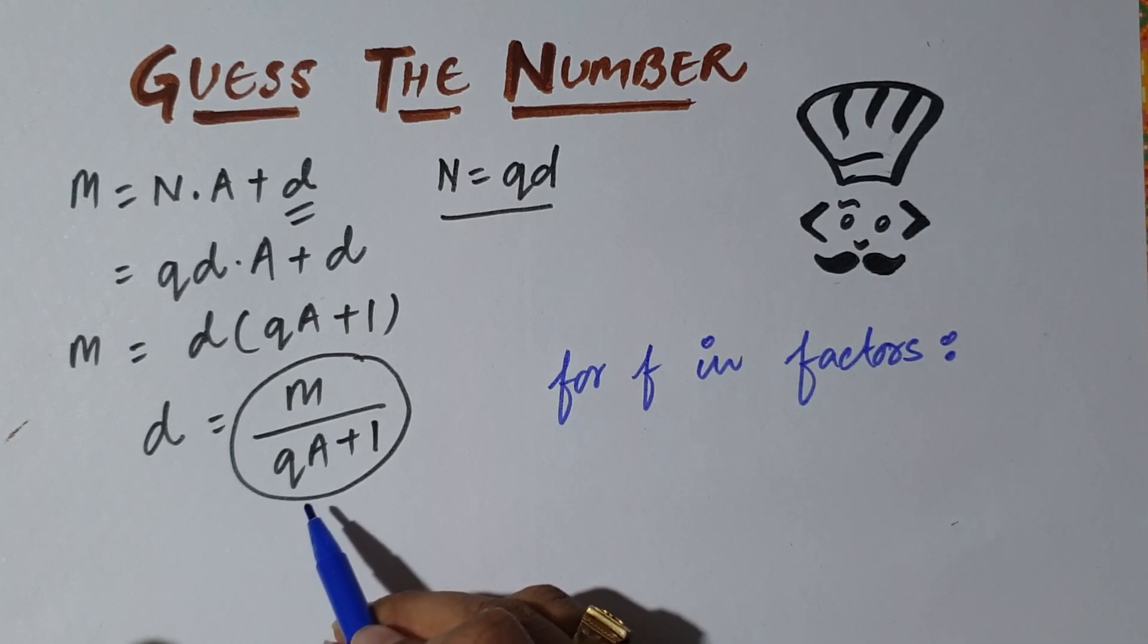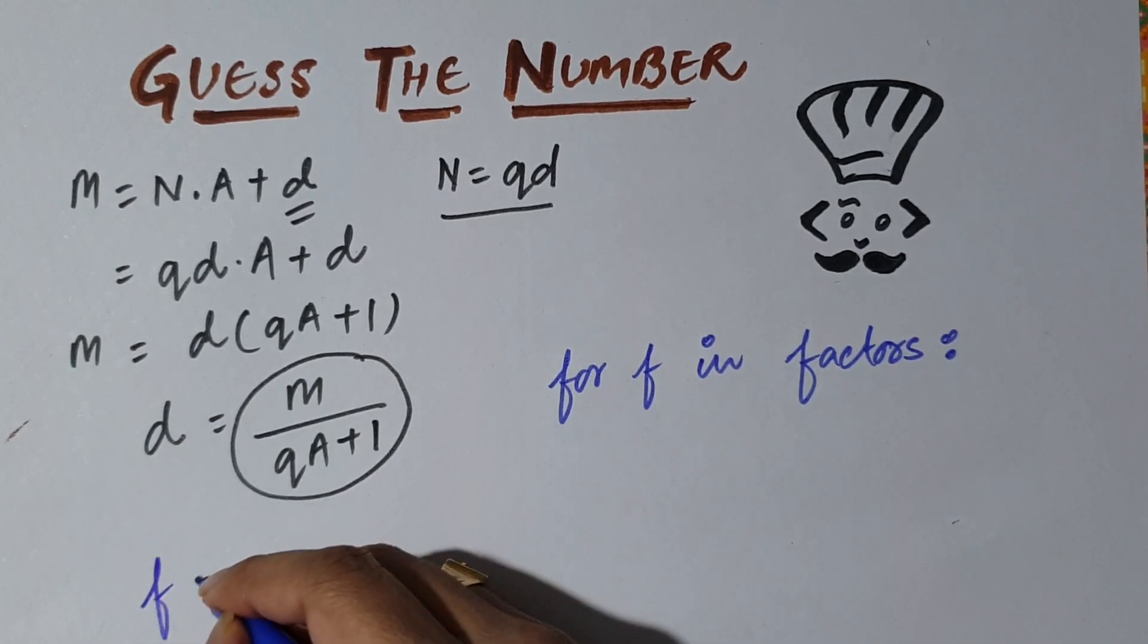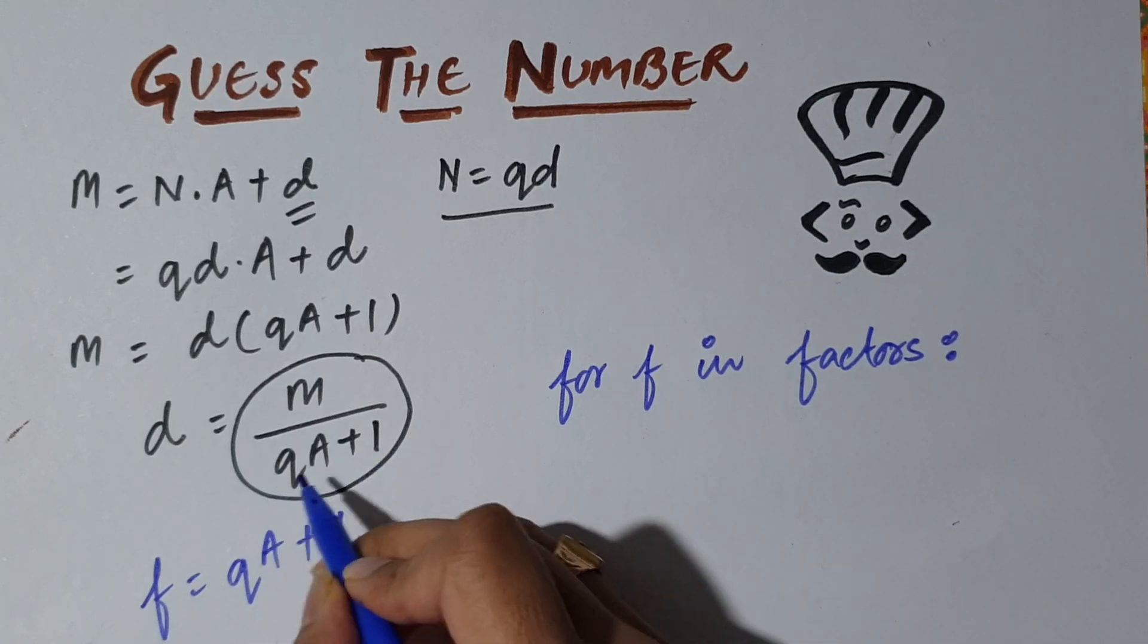So what we do now, one thing to notice is that F will be equal to QA plus 1. Obviously this is F, all the F's.